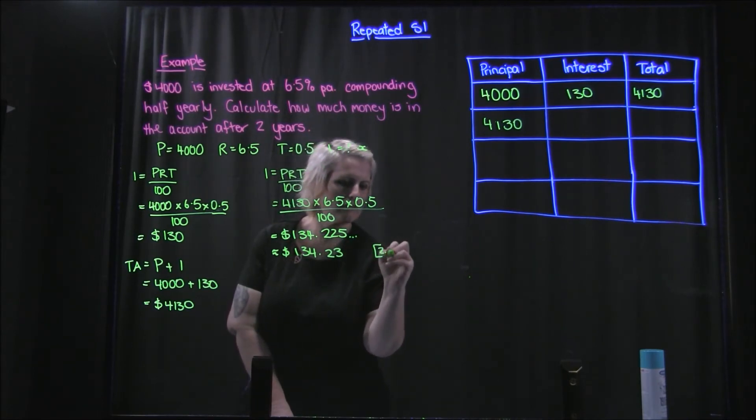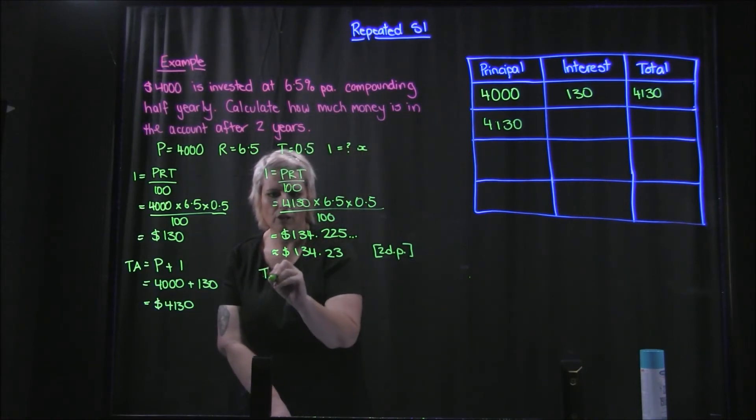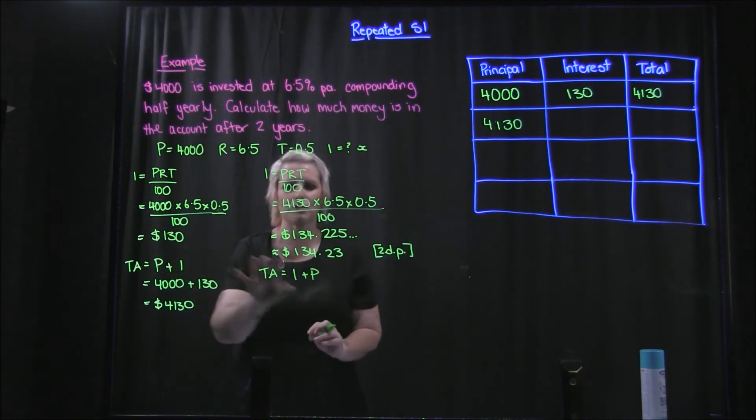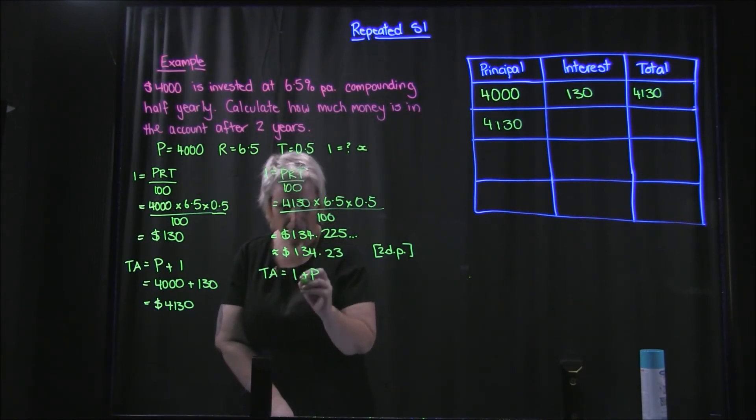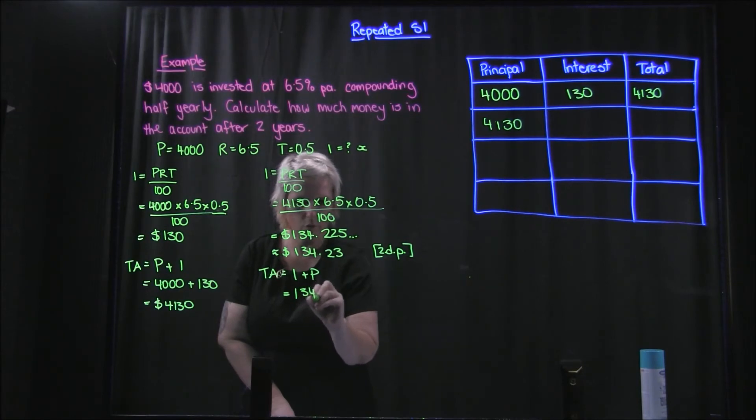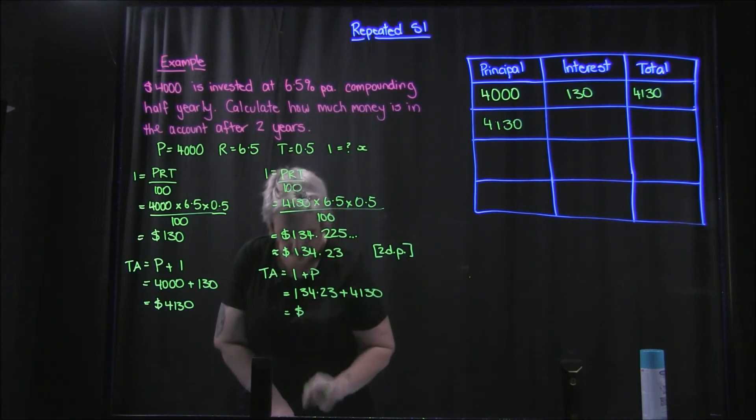And I just state two decimal places. Okay, then I work out my total amount. Total amount is going to be the interest plus principal. Now remember I'm not leaving much of a gap here because I'm a bit short on room, but you should definitely leave a line between each set of calculations so that it's clear to see. So total amount is going to be your $134.23 plus your $4130, which is going to be...